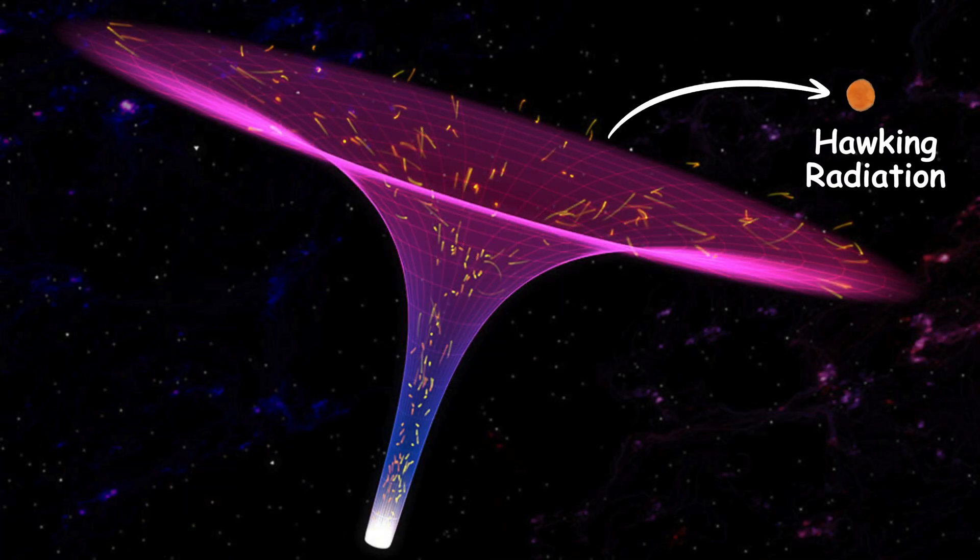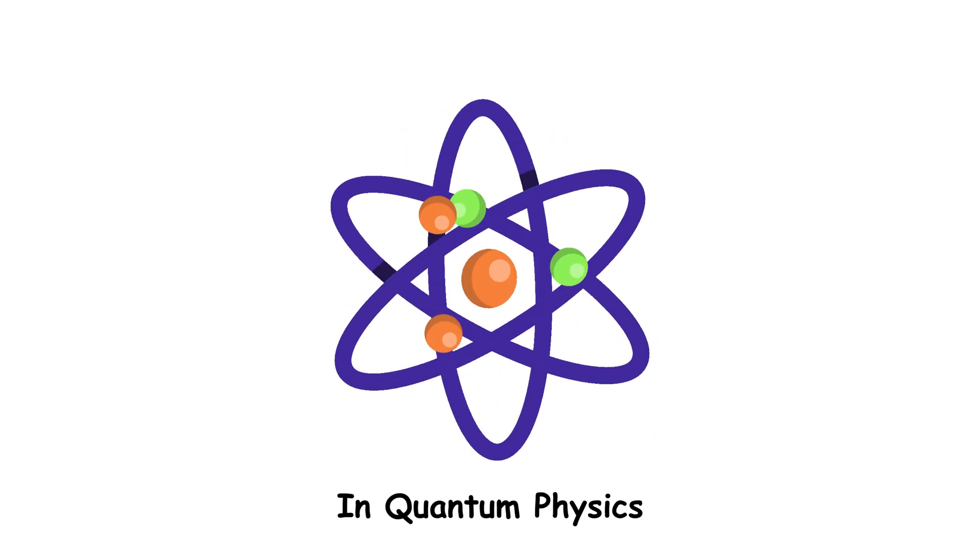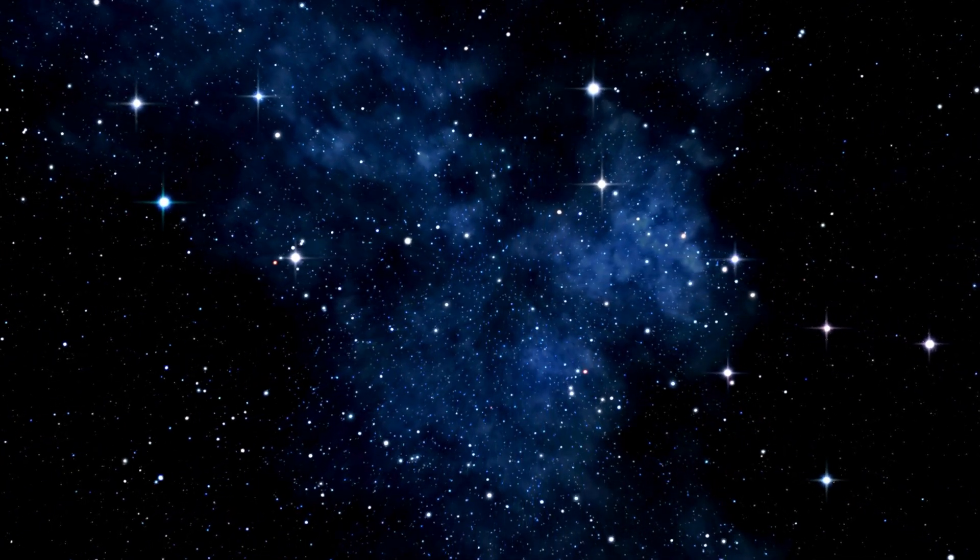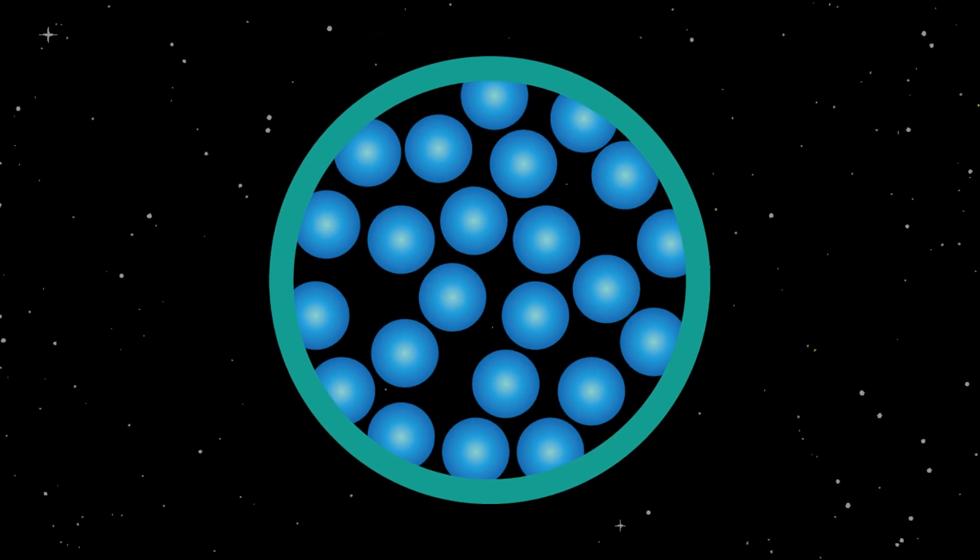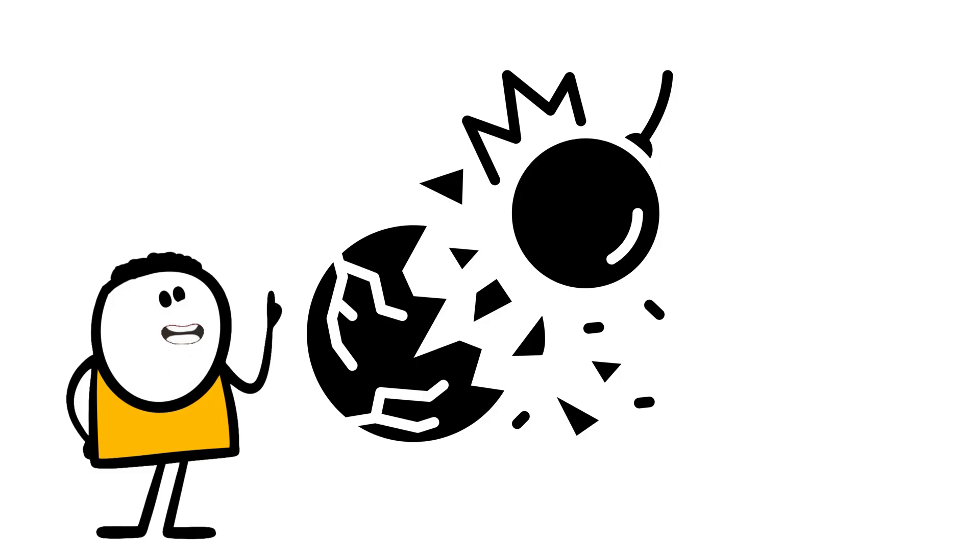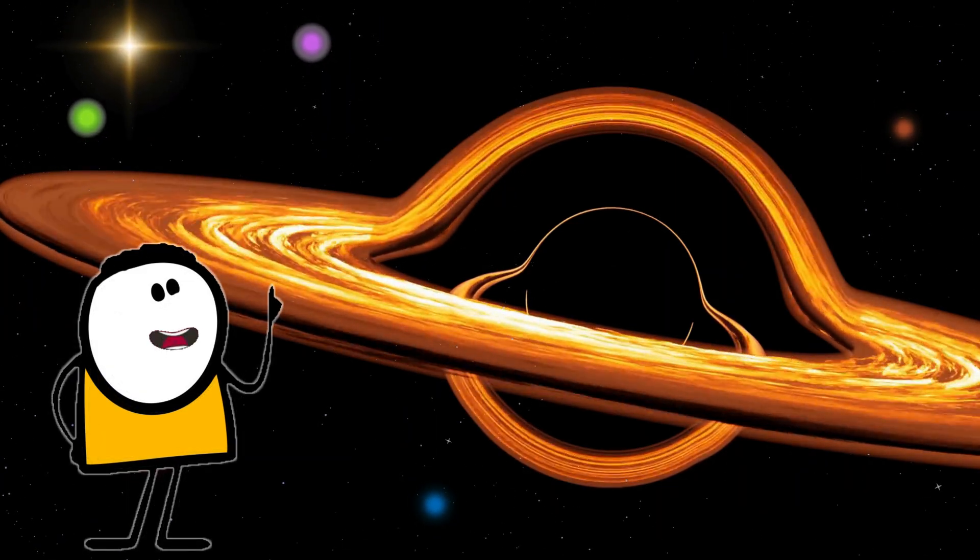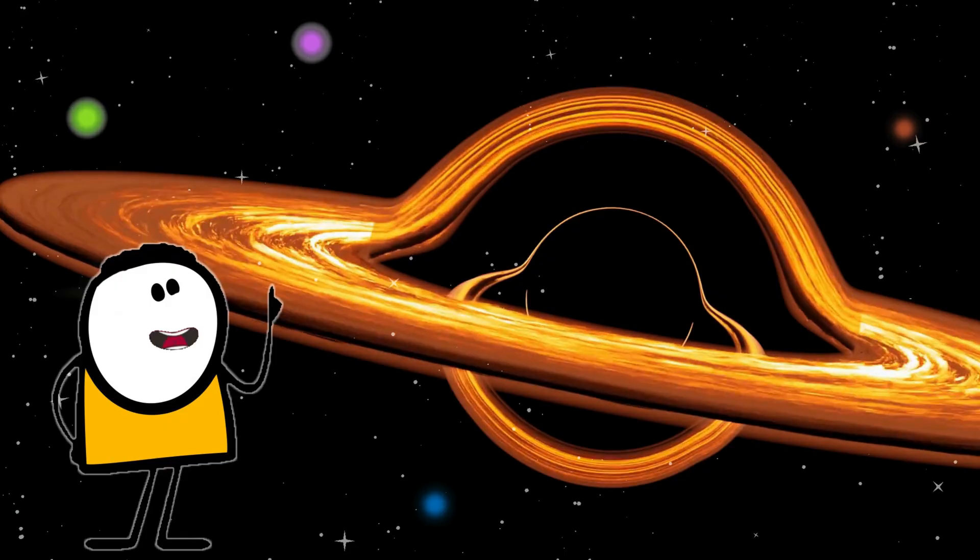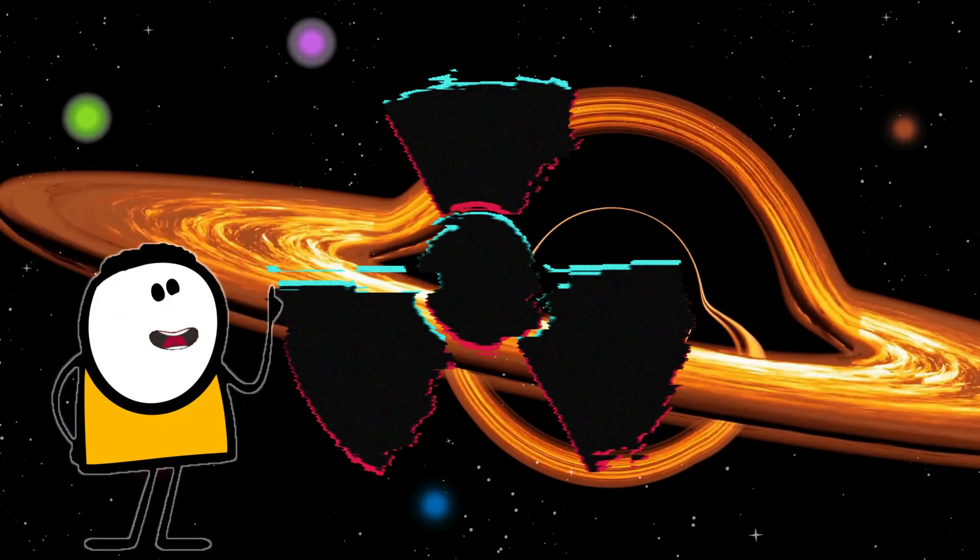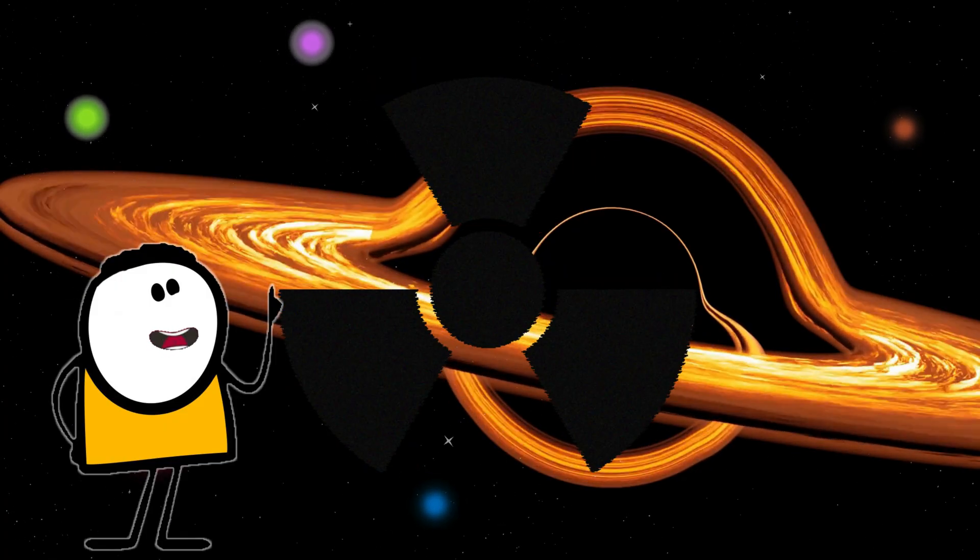Enter Hawking radiation. In quantum physics, space isn't empty, it's teeming with energy. Virtual particles constantly pop in and out of existence. Usually, they annihilate each other instantly. But near the event horizon, one particle might fall in, while the other escapes. The escapee becomes Hawking radiation and it steals energy from the black hole.